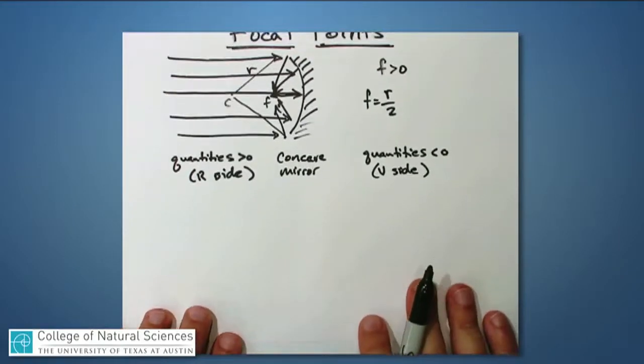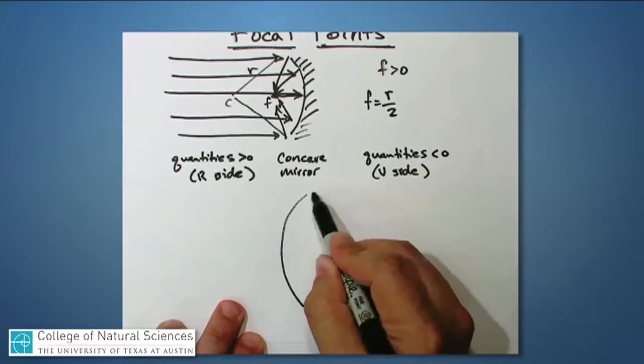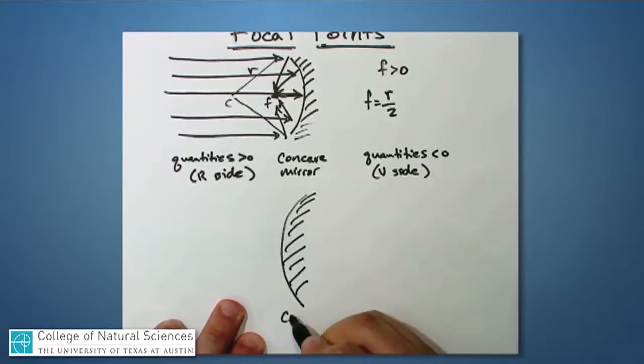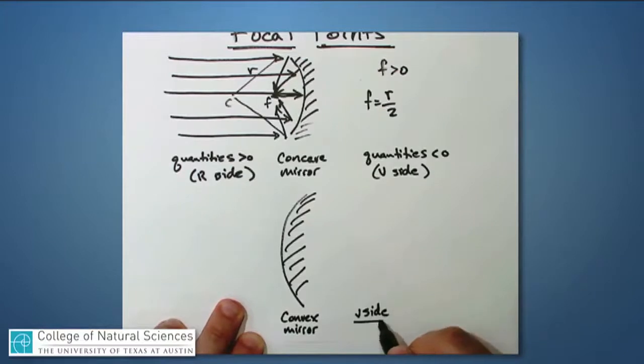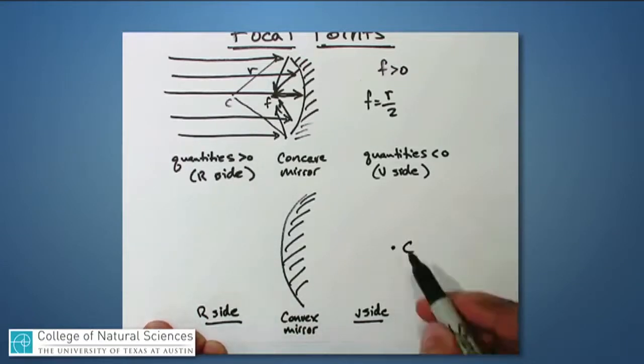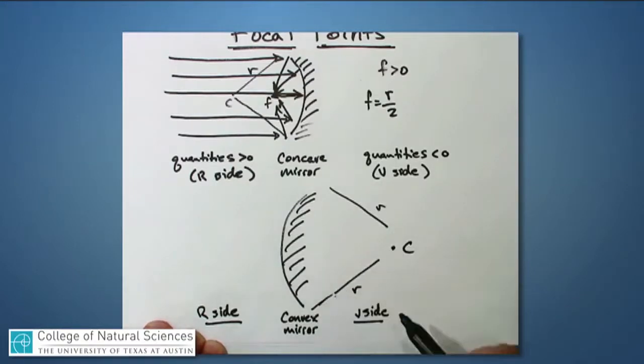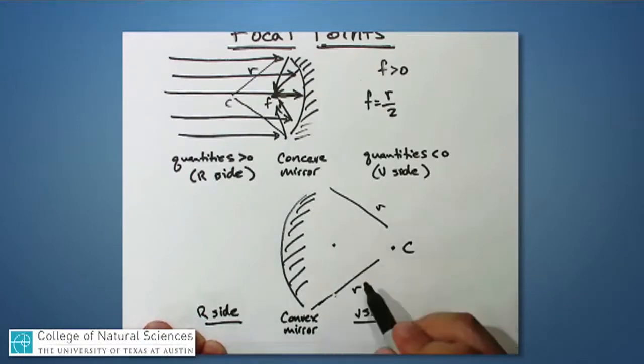The other kind of mirror, of course, is the so-called convex mirror. Over here is the so-called V side. Over here is the so-called R side. And in this case, the center of curvature is back over there, so this might be one radius of curvature, and the focal length will be right there.